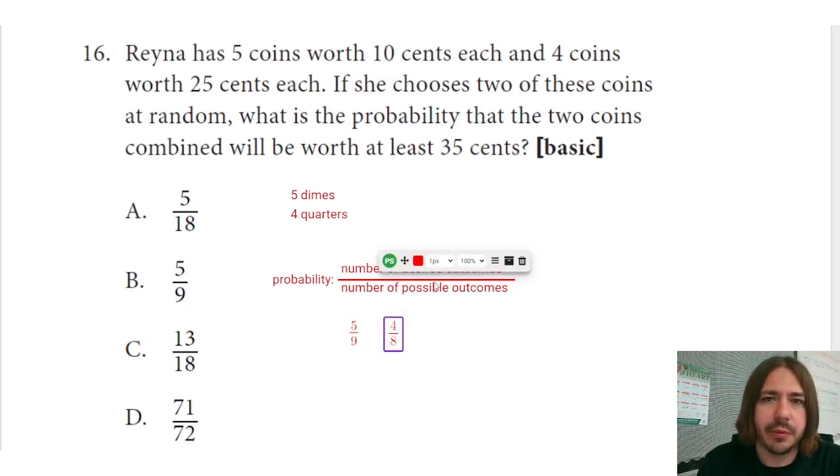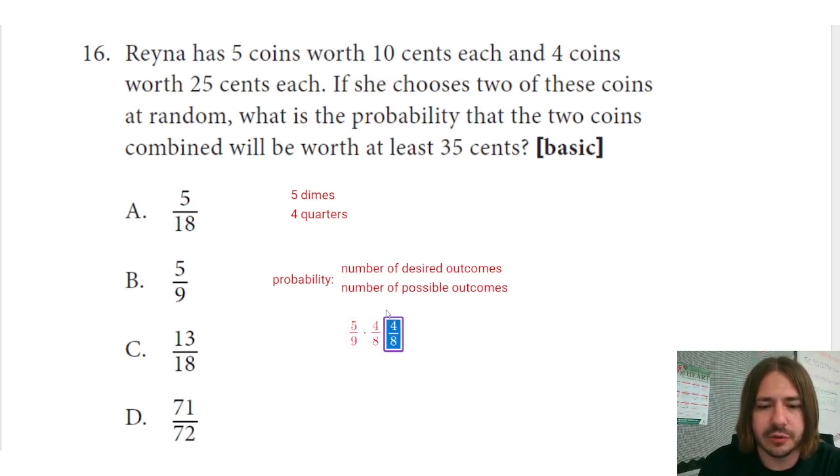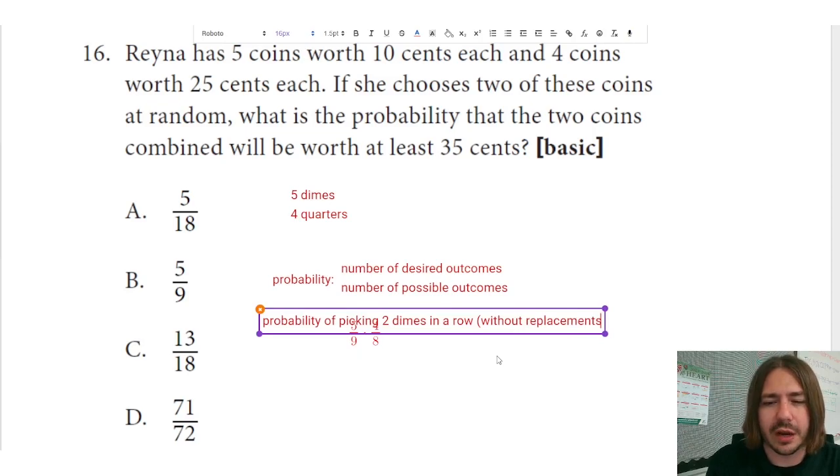Now this is a combined probability problem where we're not just calculating the probability of one event but two consecutive events, and so the way that you combine these probabilities is to multiply them. So if I multiply these fractions, what this is going to give me is the probability of picking two dimes in a row. I'm going to say times four eighths, which is really just one half, but I'm not even going to bother reducing it because these numbers are just small anyway. Here is the probability of picking two dimes in a row without replacement, meaning we're not going to put the dime back.